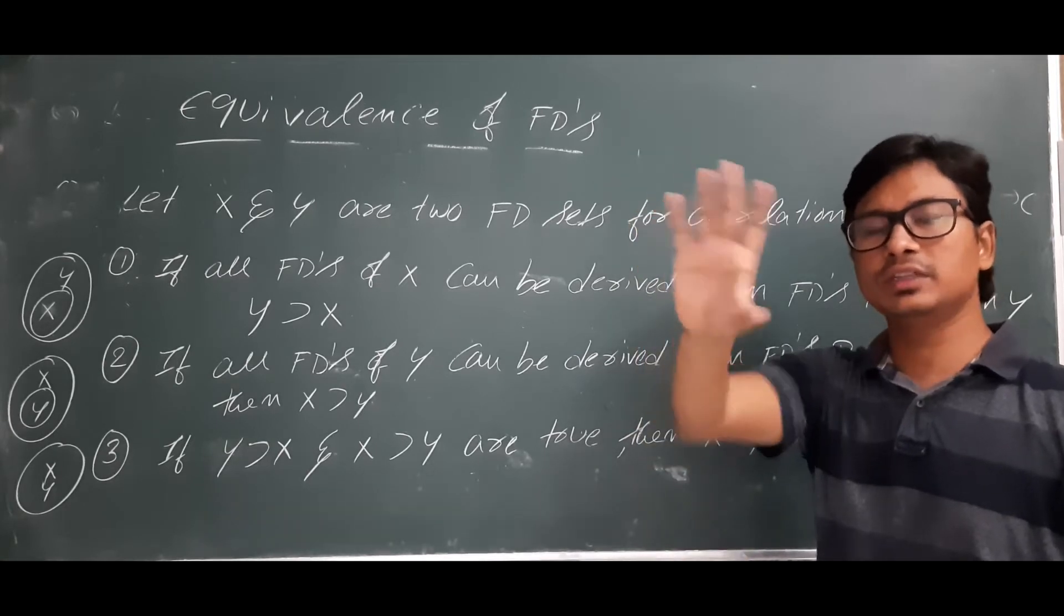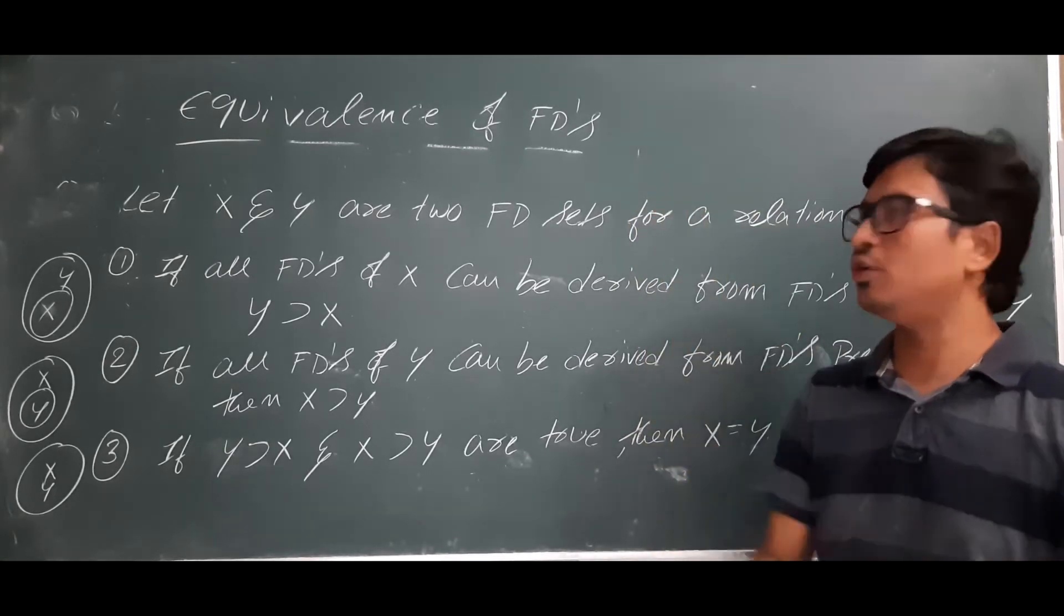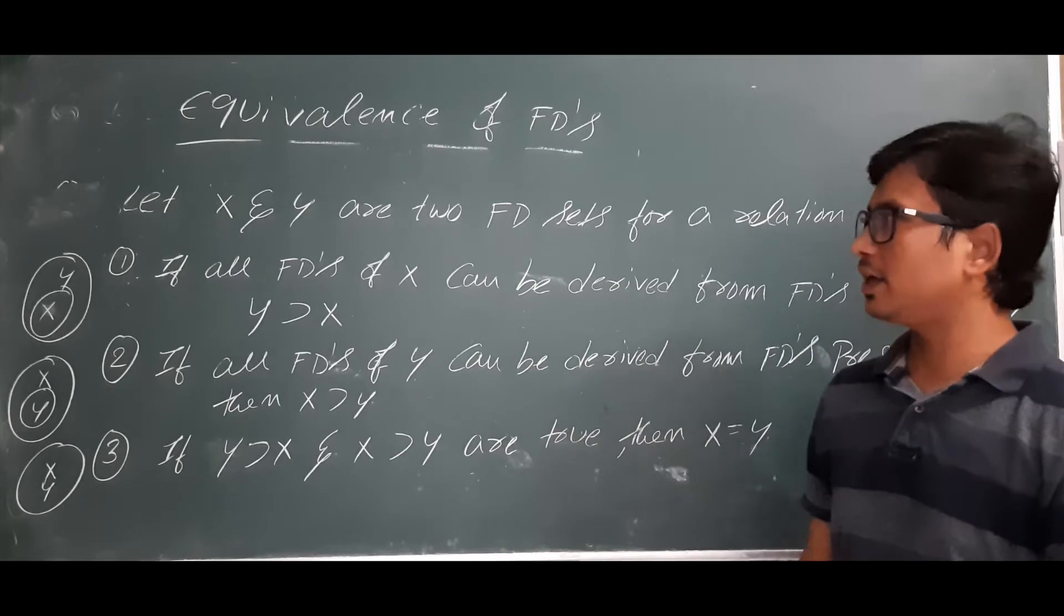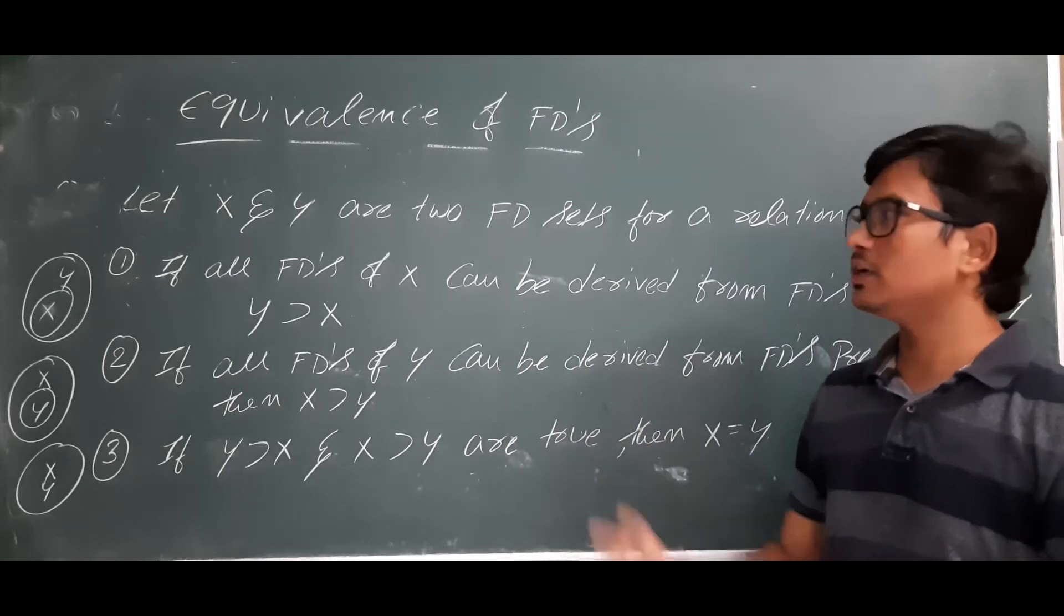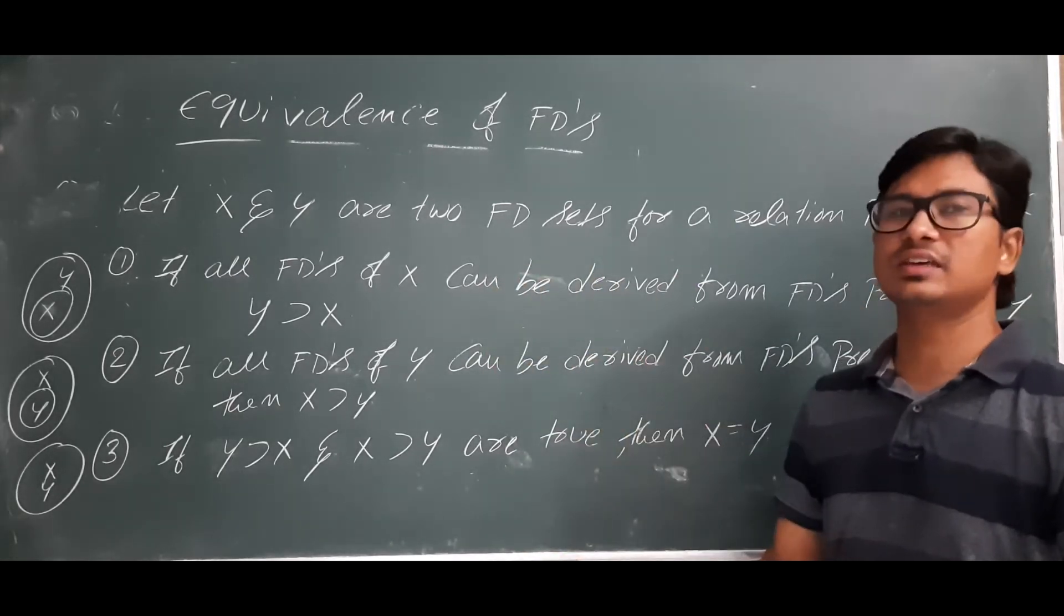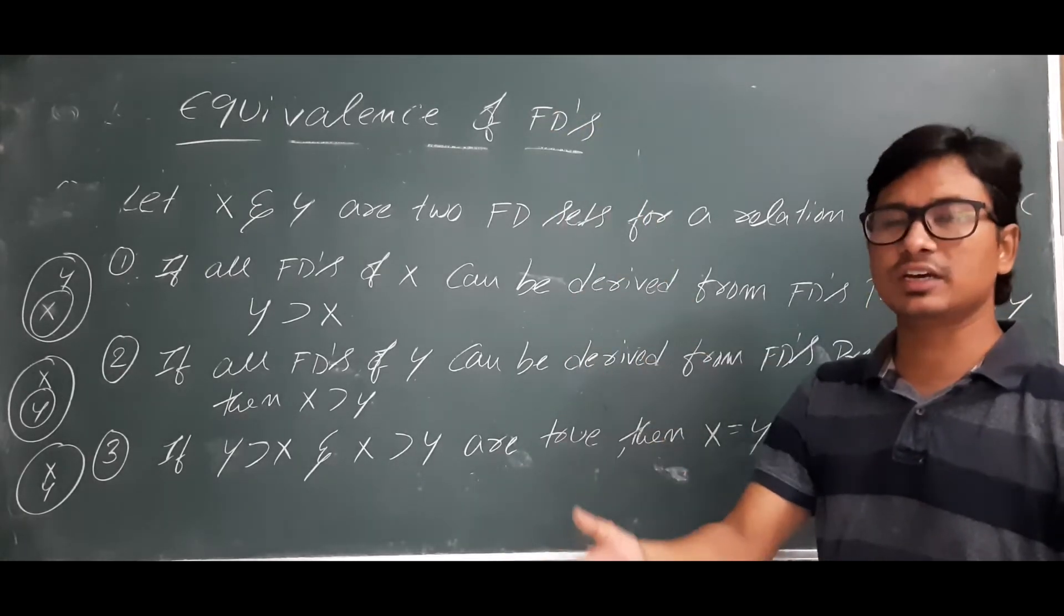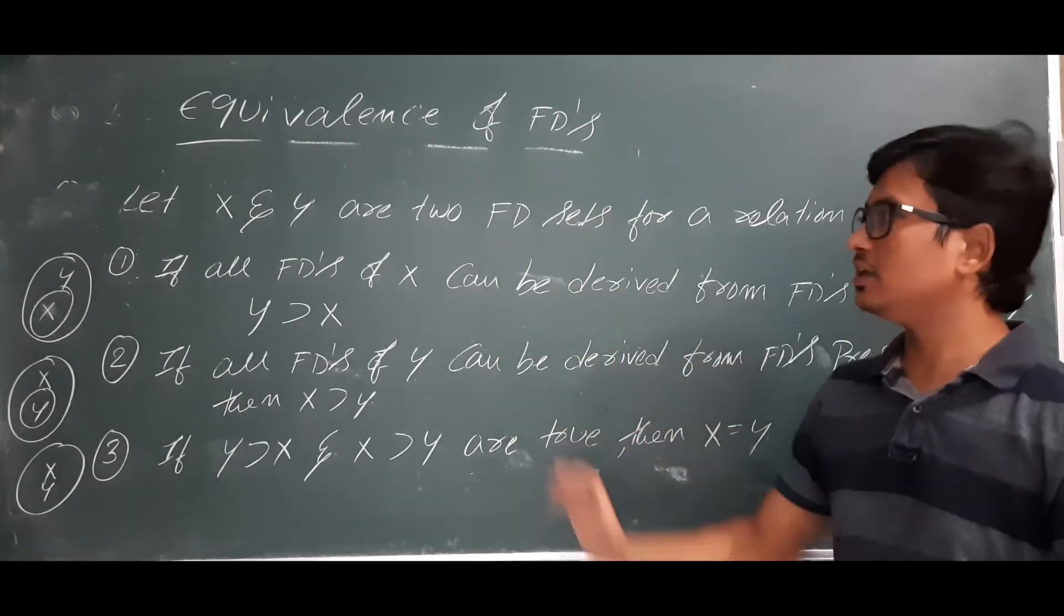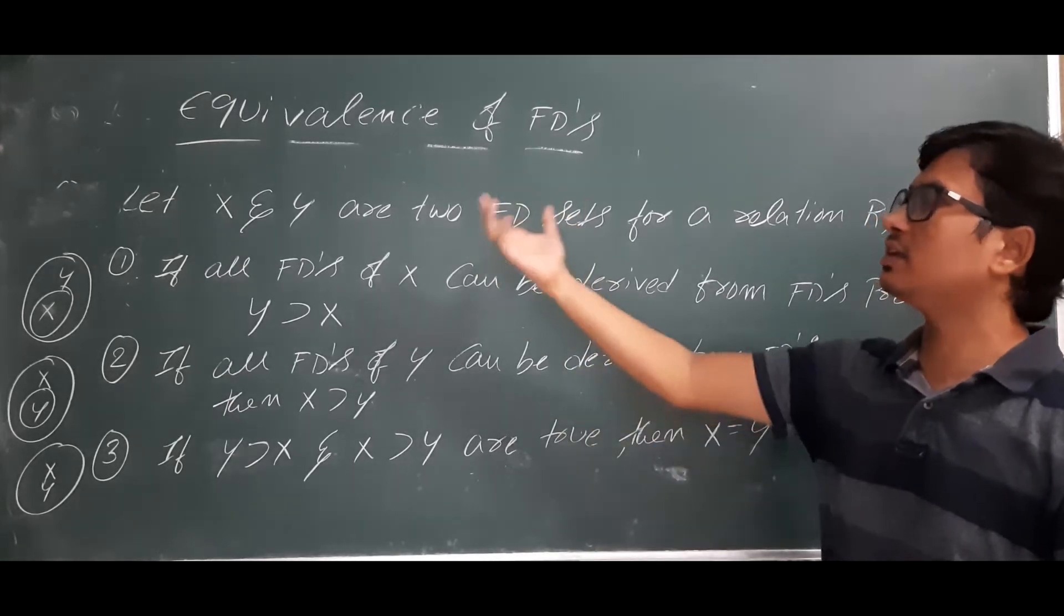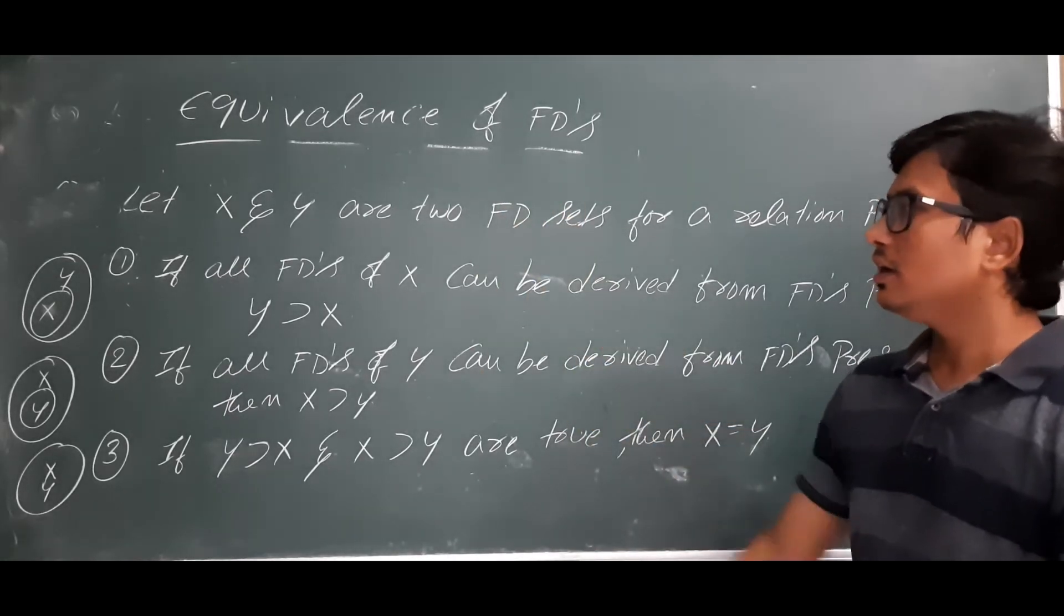Now they want to check whether the two FD sets are equivalent or not. There is set one of FD's and set two of FD's. They are asking us to check whether they are equivalent or not. What is step one?